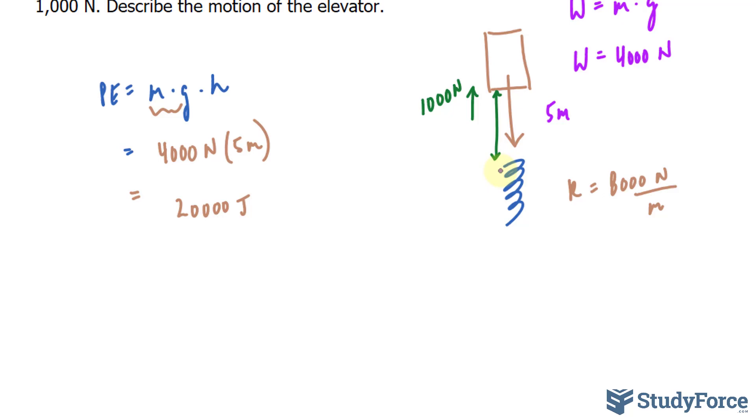So let's represent x as the height at which the elevator will compress the spring. So not only do we have h, but we also have x. Let's modify our expression a little bit. So rather than writing down h, I'll write down h in parentheses plus x. As a result, our expression for potential energy becomes 4,000 bracket (5 + x).